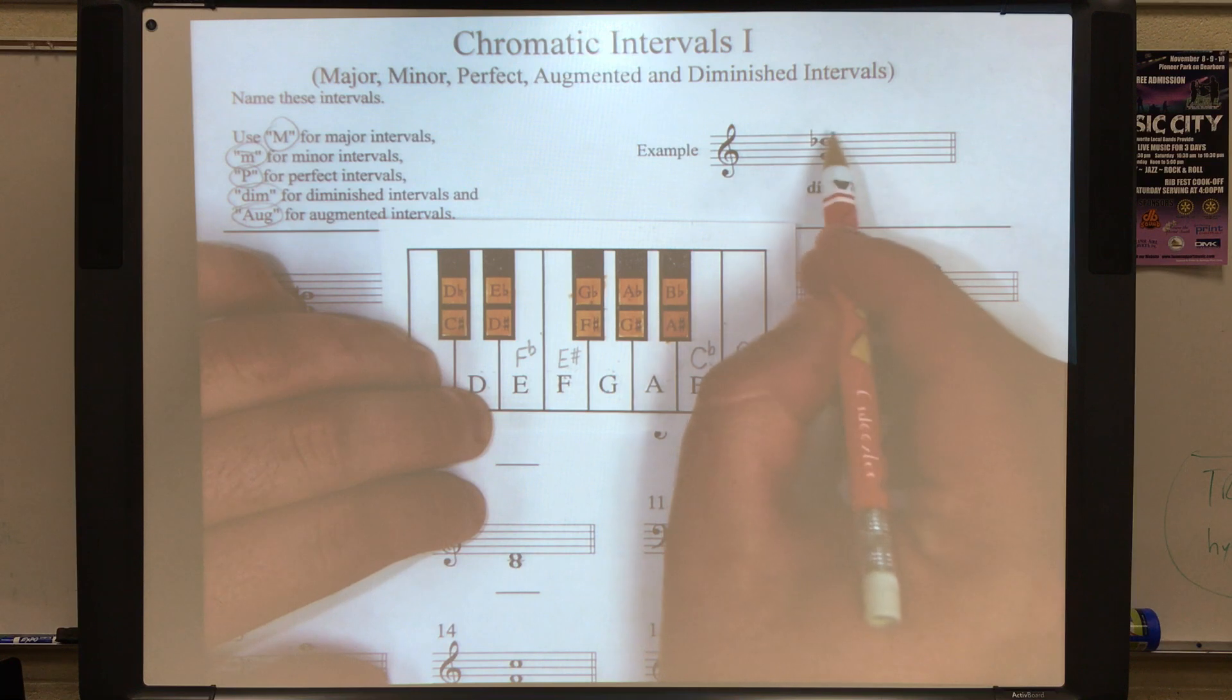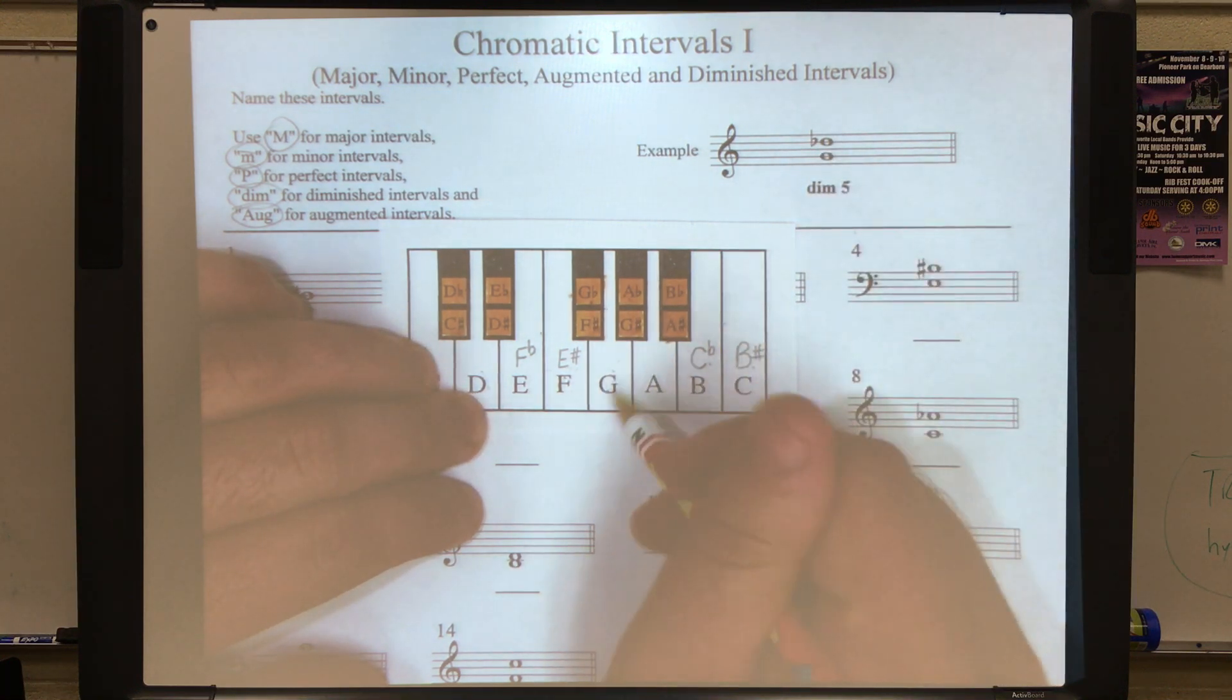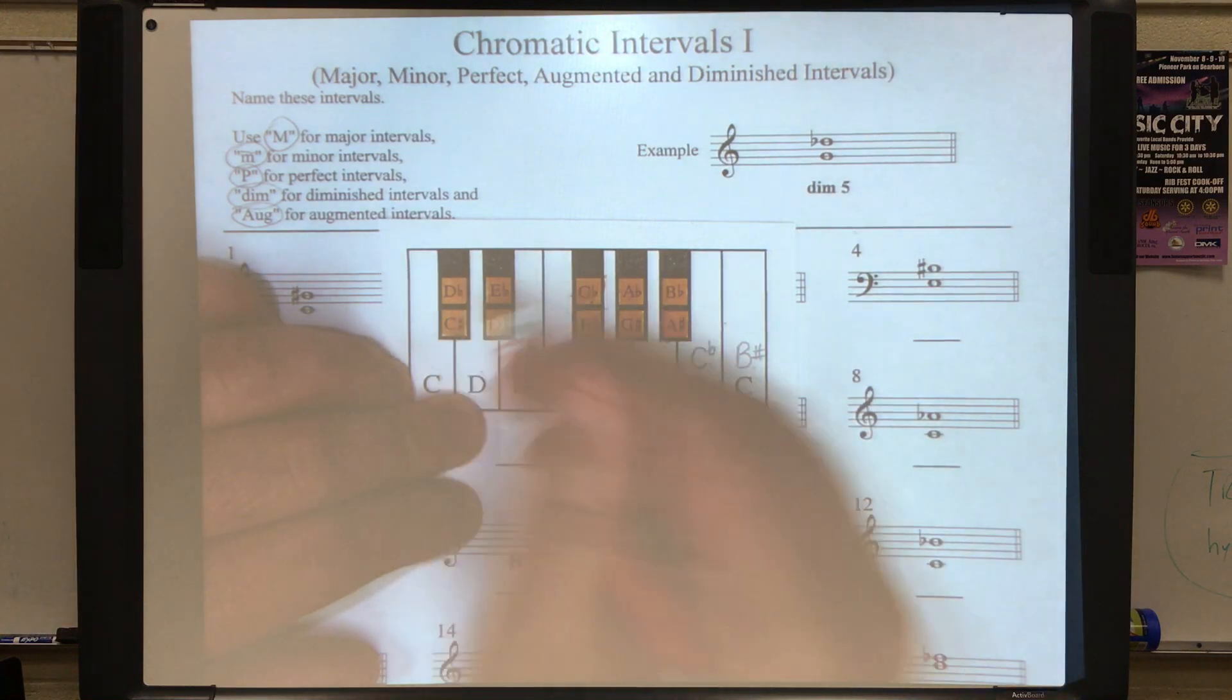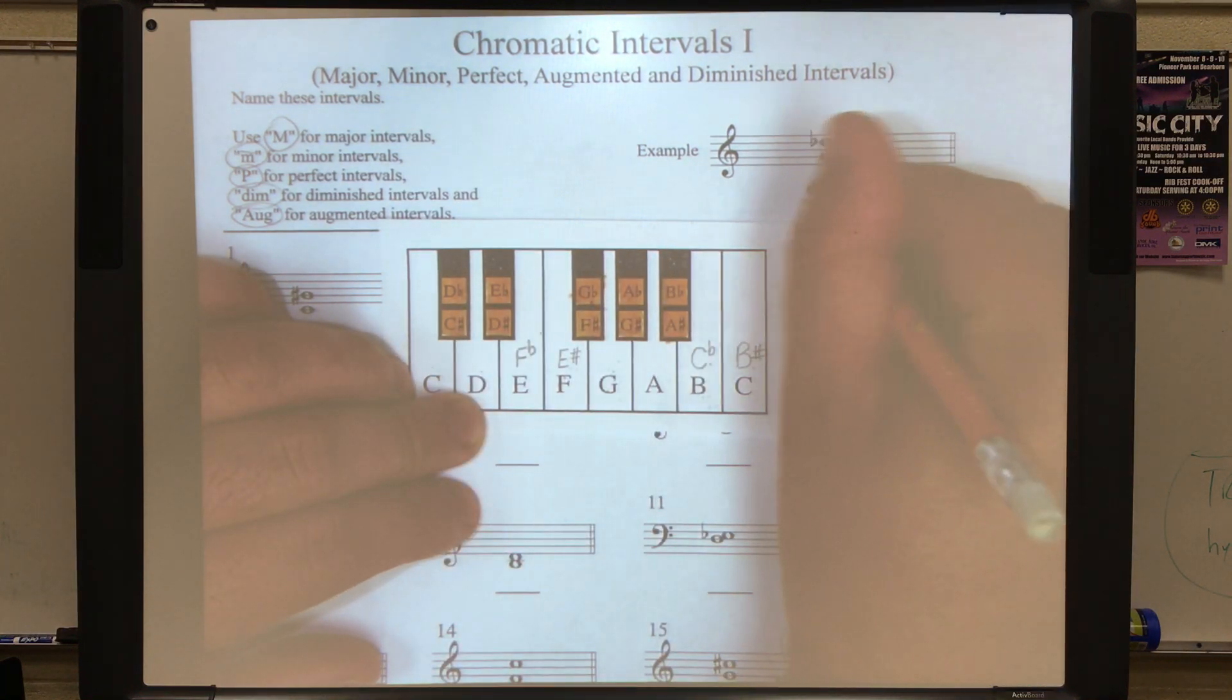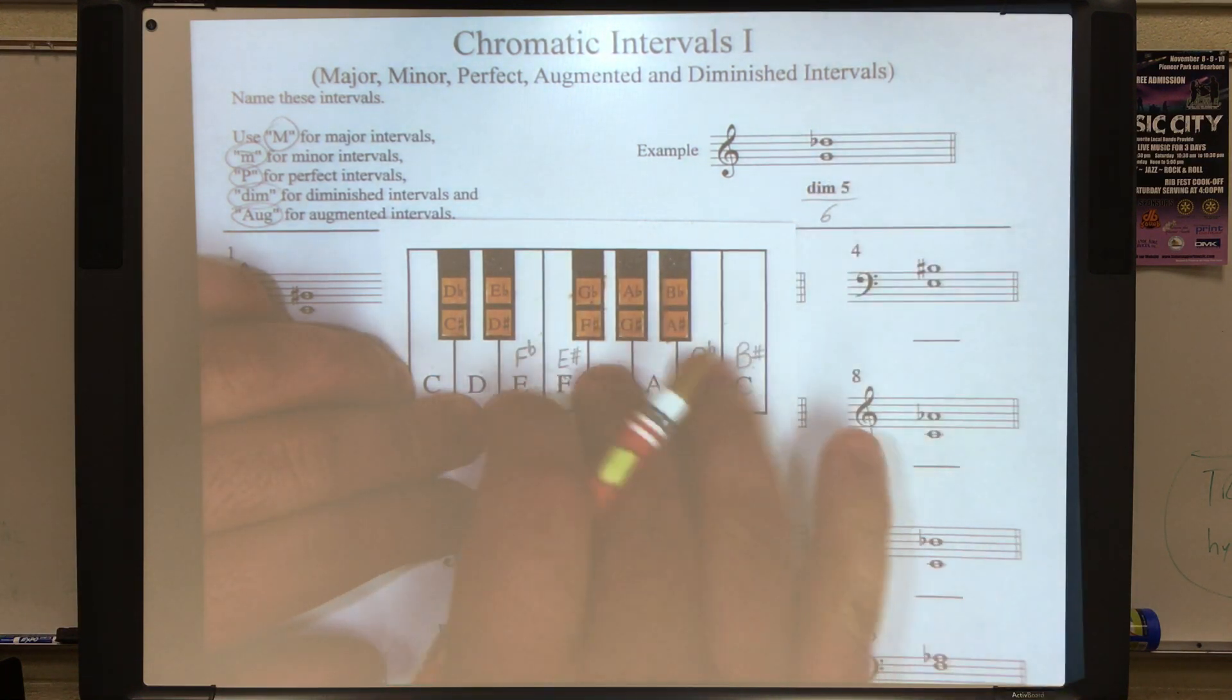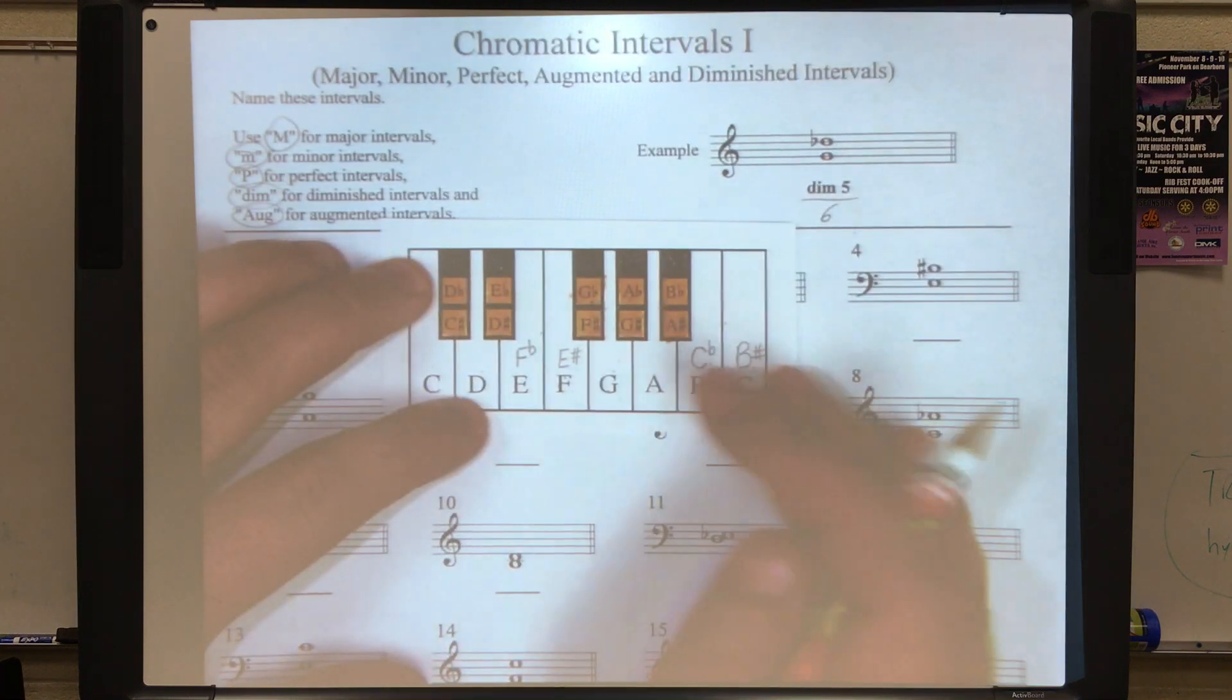If this were a sharp, it would be an augmented interval. Let's count up. G is zero, one, two, three, four, five, six. Six half steps. Check that out. It's a diminished fifth.